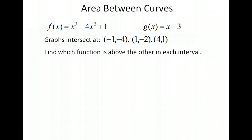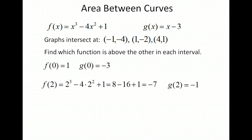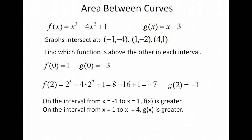Let's decide which function is above the other one. We're going to plug in values. If we plug in a number in between negative 1 and 1 — plugging in 0 — f of 0 is 1 and g of 0 is negative 3, so the f function is higher than the g function. Then plugging in 2 for the second interval between 1 and 4, the f function is negative 7 at 2 and the g function is negative 1 at 2, so in this case the g function is above the f function. So on the interval from negative 1 to 1, f of x is greater, and on the interval from 1 to 4, g of x is greater.